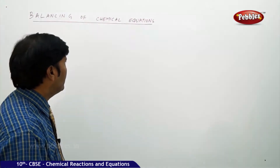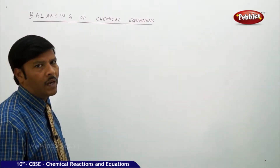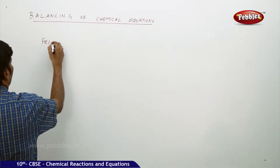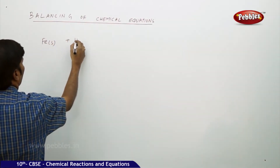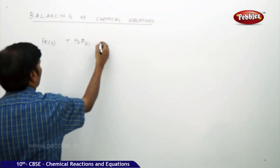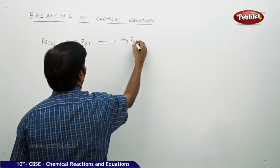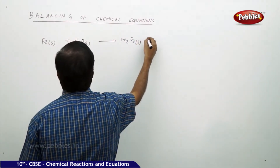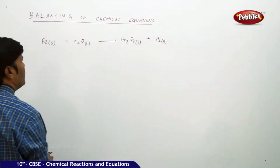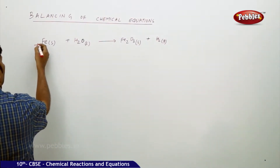Today we would like to understand this topic in a very simple manner by selecting some random examples. For example, iron solid plus H₂O liquid gives rise to Fe₂O₃ solid plus H₂ gas. How do you balance this equation? I am underlining the molar coefficients here.